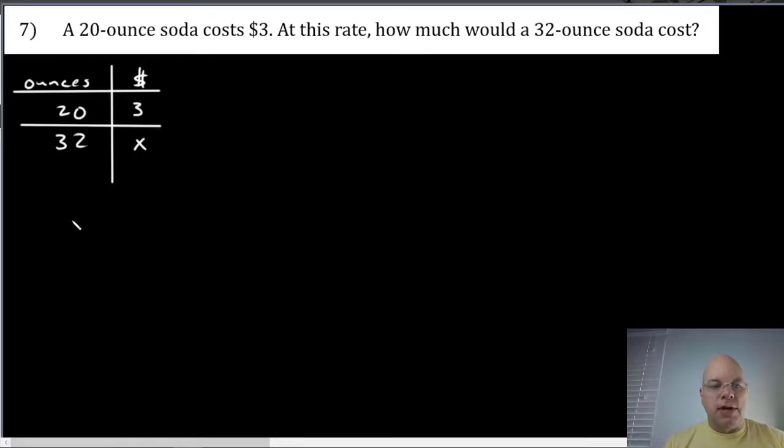We want to know how much 32 ounces would cost, so there's our unknown x. If you set up a ratio table, you can set your proportion up directly from your ratio table: 20 over 32 equals 3 over x.